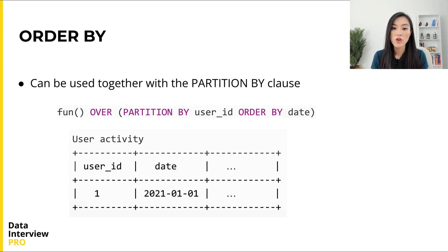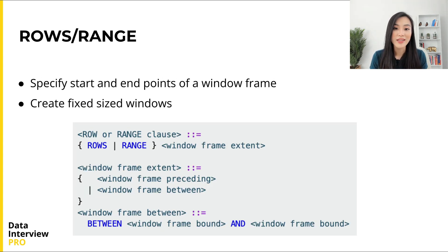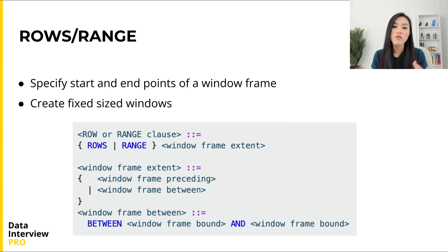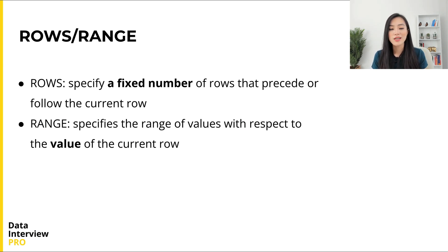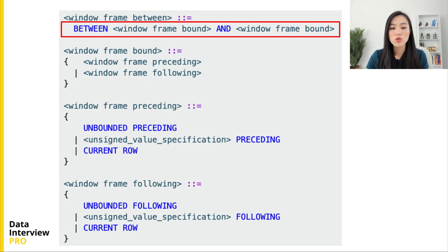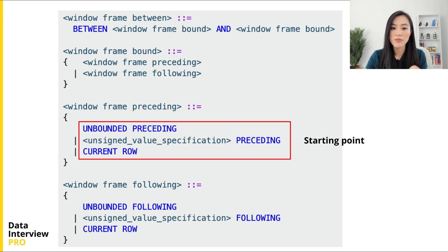The last argument in the OVER clause is ROWS or RANGE, which specifies the starting and end points of a window frame. This way we can create fixed-size windows, which can be used for computing moving averages or running totals with a limited number of rows. If we don't specify this argument, the default is from the start of the window frame to the current row. The difference between ROWS and RANGE is that ROWS specifies a fixed number of rows that precede or follow the current row, while RANGE names the rows logically by specifying a range of values relative to the current row.